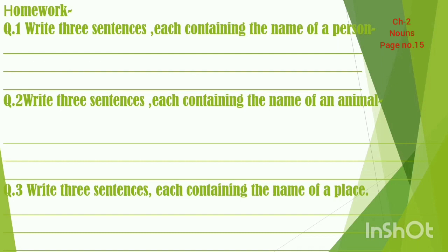Let's repeat the homework: question one — write three sentences, each containing the name of a person. Question two — write three sentences, each containing the name of an animal. Question three — write three sentences, each containing the name of a place. Do this homework in your rough notebook. Noun is the name of a person, place, animal, or a thing. Learn this definition and solve these questions. Thank you and have a nice day — I hope you enjoyed watching this video.